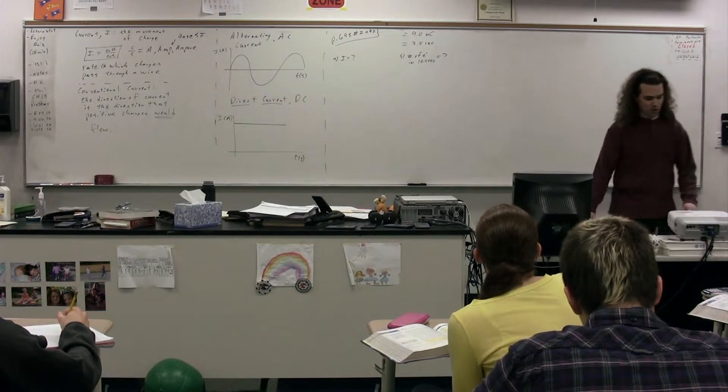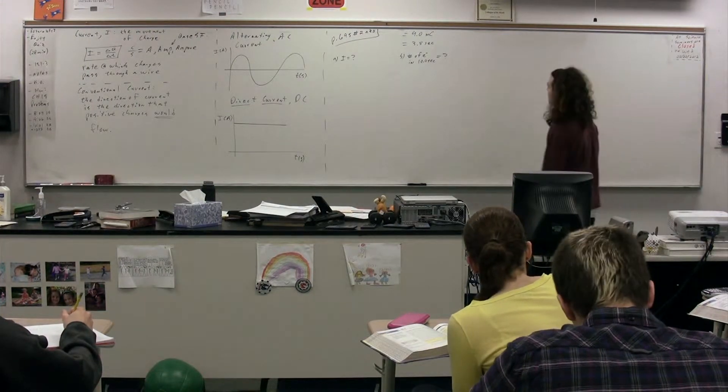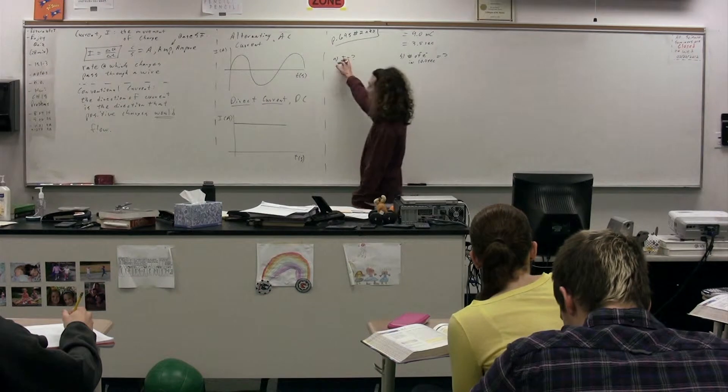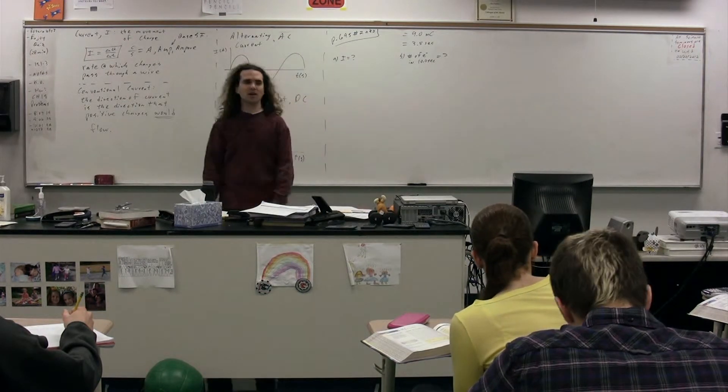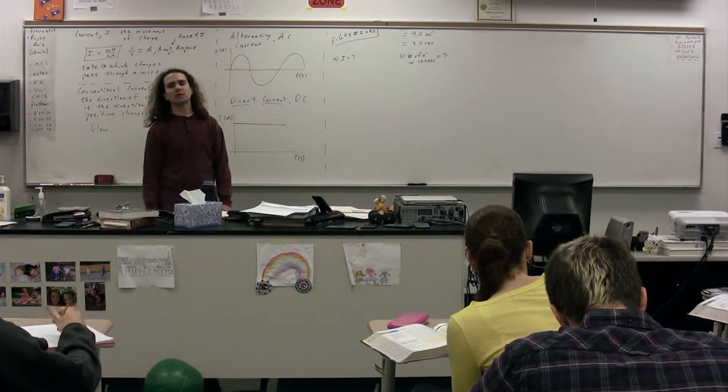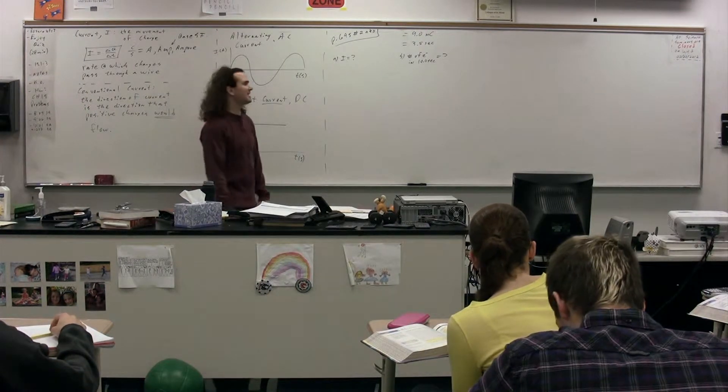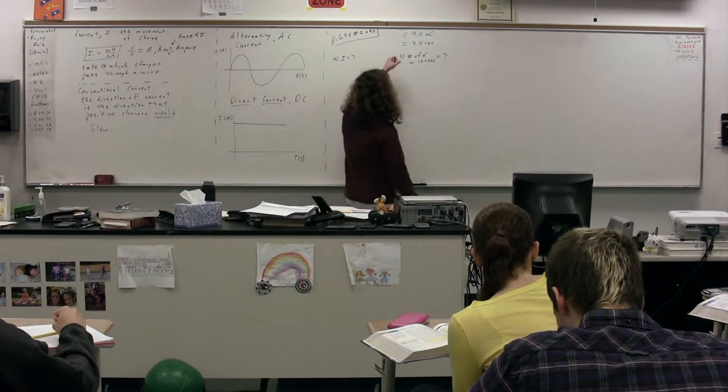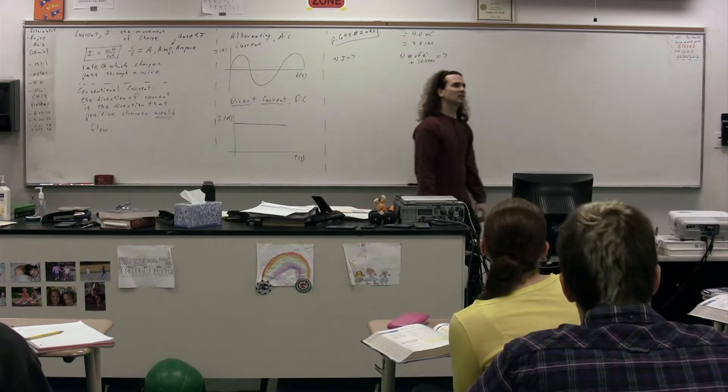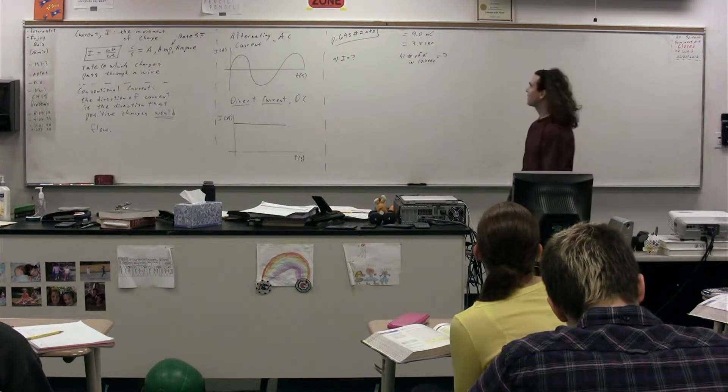We know that nine millicoulombs pass through that wire in 3.5 seconds. Part A, find the current. Part B, if instead we're talking about ten seconds, how many electrons pass through that wire? I did not put these equal to any variables because I need to know what variables they are equal to.